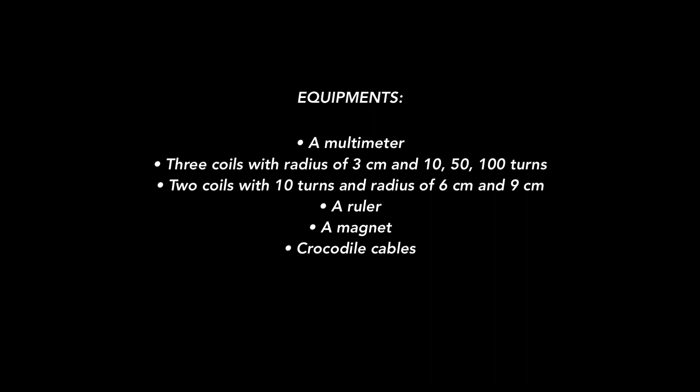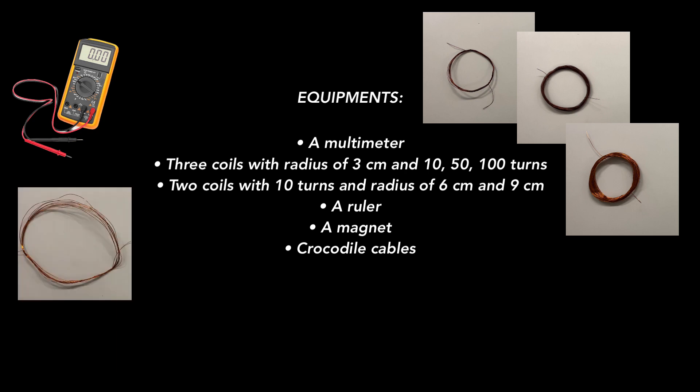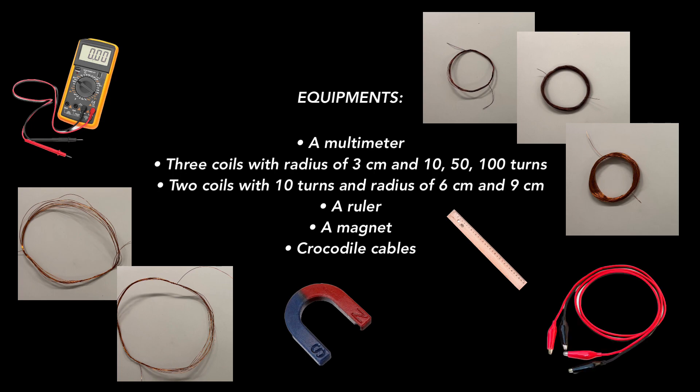This is a list of the equipment I will be using in this experiment: a multimeter, three coils with radius of three centimeters and ten, fifty, and a hundred turns, two coils with ten turns and radius of six centimeters and nine centimeters, a ruler, a magnet, and crocodile cables.